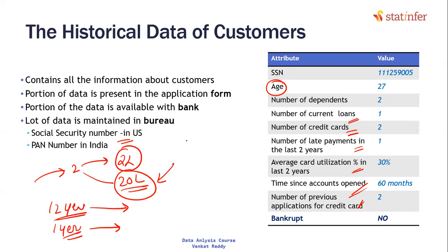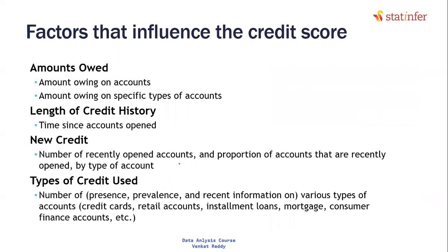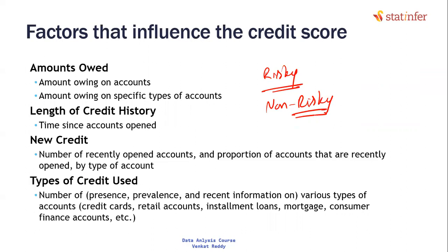How many existing loans does the customer already have? One customer has three existing loans, another has ten, another has one - obviously the customer with more loans is riskier. Using all these factors we can find out whether a customer is risky or not. Historically we have two years of data - looking at that data, we identify who turned out risky and who turned out non-risky, so we can approve or reject future loan applications accordingly.